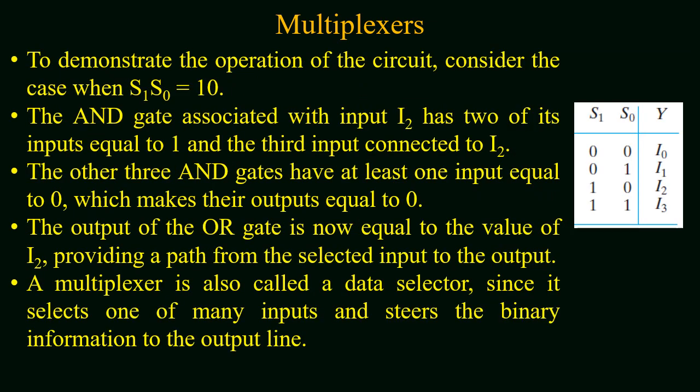The function table lists the input that is passed to the output for each combination of the binary selection value. The selection table for the 4-to-1 line multiplexer shows that if S1 and S0 both have a value of 0 then I0 will be provided at the output. If S1 equals 0 and S0 equals 1 then I1 will be provided. If S1 equals 1 and S0 equals 0 then I2 will be provided, and if both are 1 then I3 will be provided to the output.